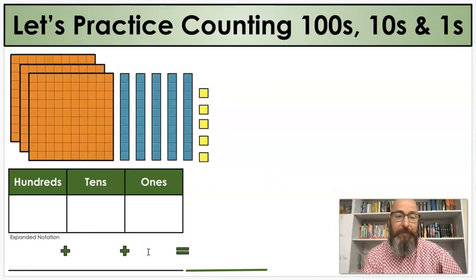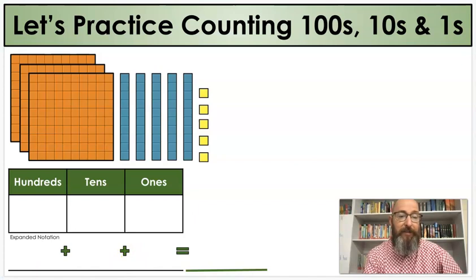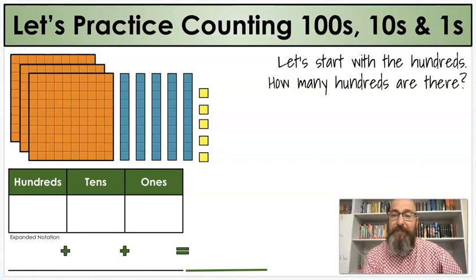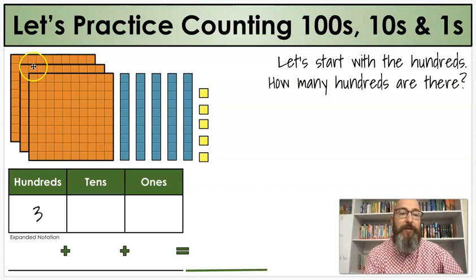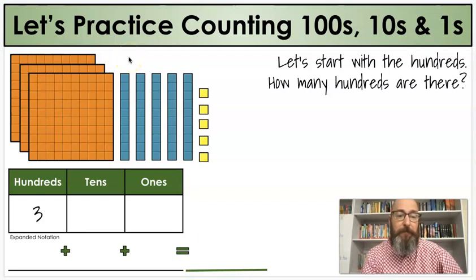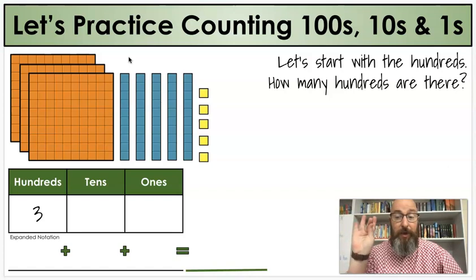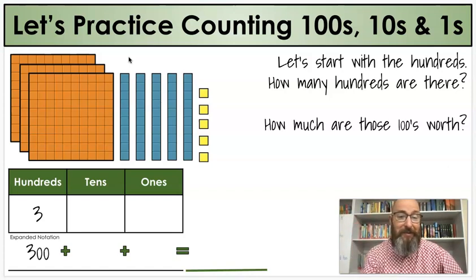Let's do another one. Again, let's start with the hundreds. How many hundreds are there? 3 is correct. 1, 2, 3. I have them stacked, but you can still see them. And how much are 300s worth? 100, 200. 300 is correct.